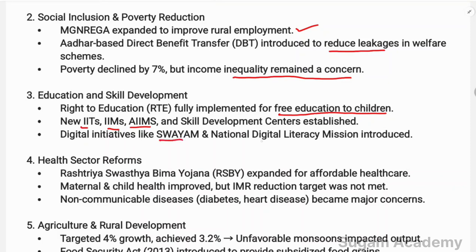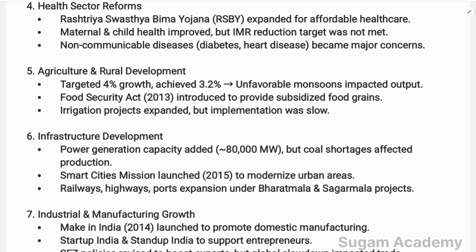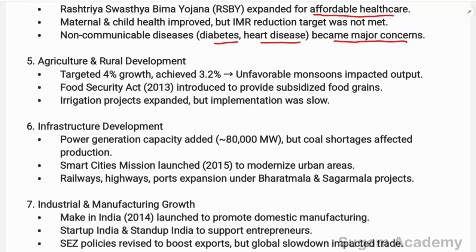Digital initiatives like the Digital Literacy Mission were introduced. In health sector reforms, the Rashtriya Swasthya Bima Yojana (RSBY) was expanded to provide affordable healthcare and health insurance. Maternal and child health improved, but the infant mortality reduction target was not met. Non-communicable diseases like diabetes and heart disease became major concerns, with cases increasing.